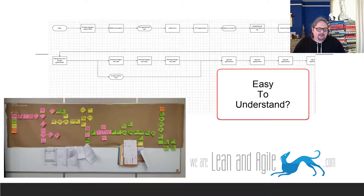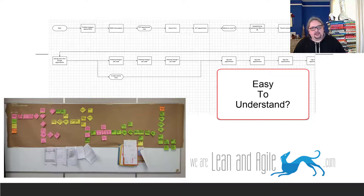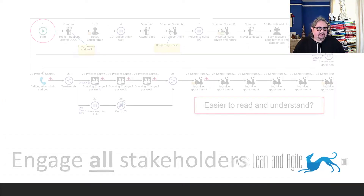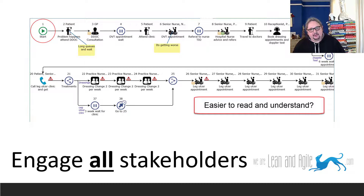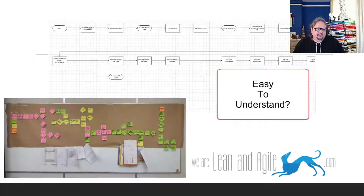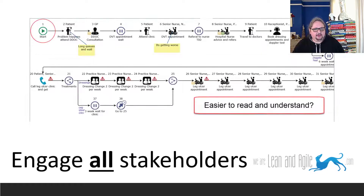Visio or any other maps are not very easy for stakeholders to understand, and for those that are in the workshop, they remember the post-its — not the Visio map you send back a week later. But with Engage, we capture live in a workshop using user-friendly icons. Which is easier to understand — this one or this one? It's been proven that the brain can read images far faster. This map has a lot more context, and they're actually identical maps.